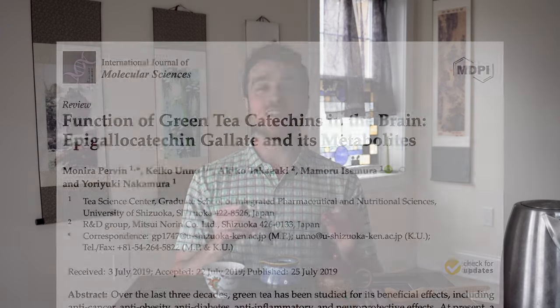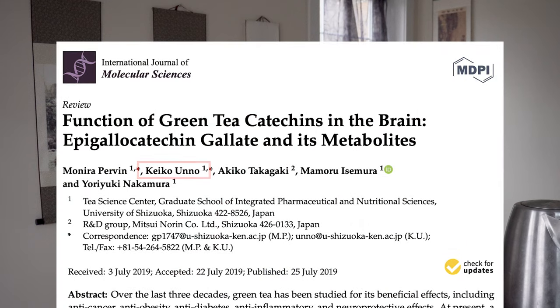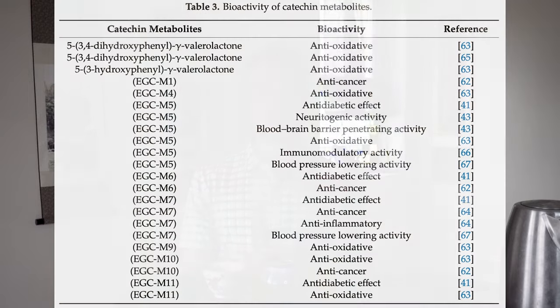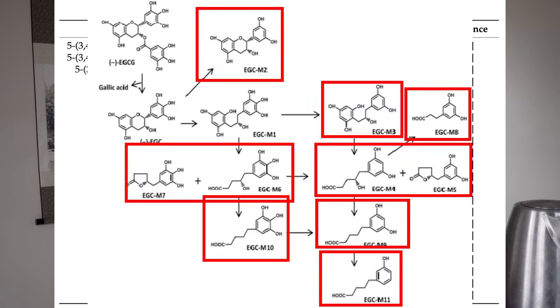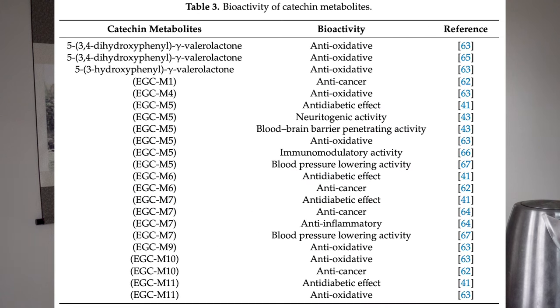That really changed the game and created this whole new research field asking: what are these metabolites doing? Do they have the same antioxidative and anti-inflammatory properties that the parent EGCG molecule does? So now I want to show you a table produced in 2019 by my favorite tea science researcher, Dr. Keiko Ono. I'm such a fan of her work — I actually flew to Japan in 2018 to visit her lab and see what she was up to, because I was tracking her research and they were doing really cool stuff.